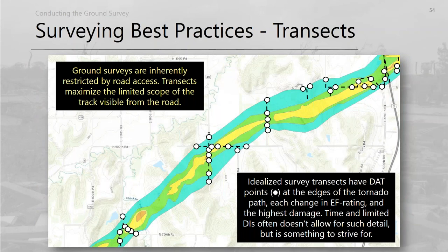Ground surveys are inherently limited by road access, so transects are the way to maximize your survey results via roads. Ideally you'd have an EF point at every significant change in the EF scale or at the edges of a tornado — though time constraints usually don't allow for that. This is something to strive for when time and equipment allow to maximize use of the road network.